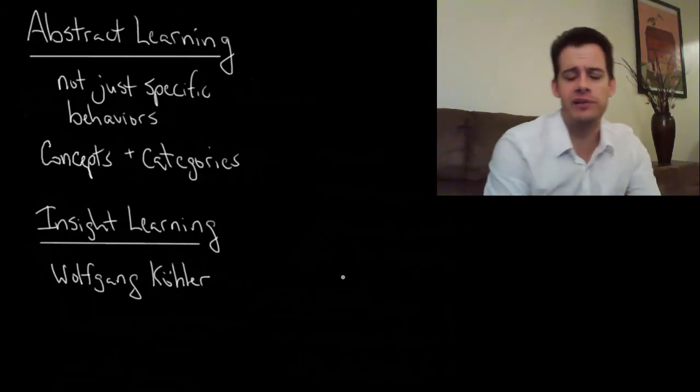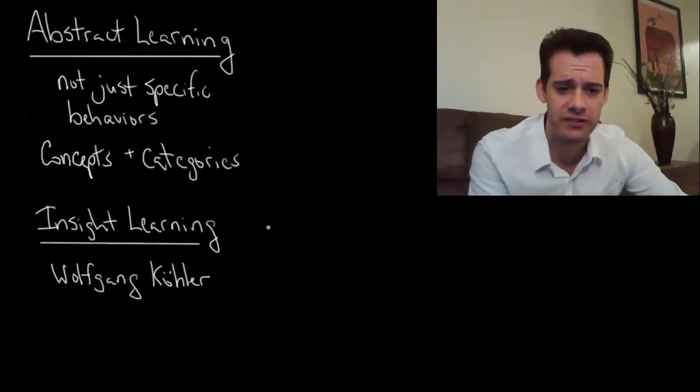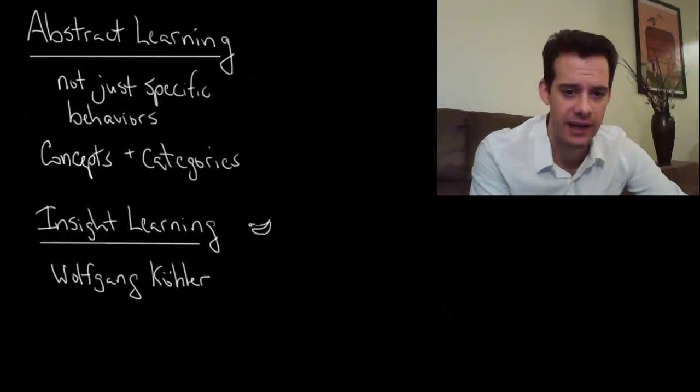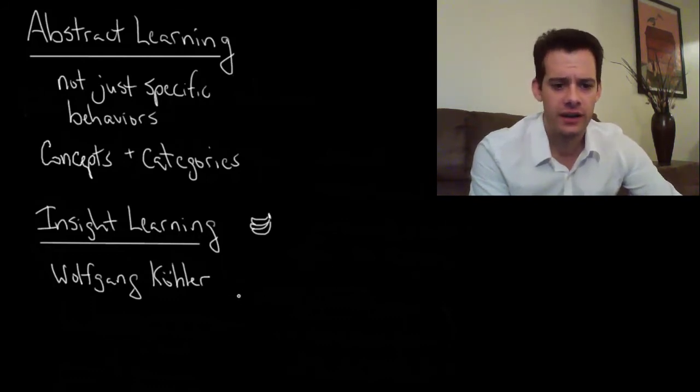What Kohler did was he gave chimps problems to solve. One of the problems that he gave was he suspended some bananas out of reach, so the chimps couldn't reach the bananas and then in the room there were some boxes.